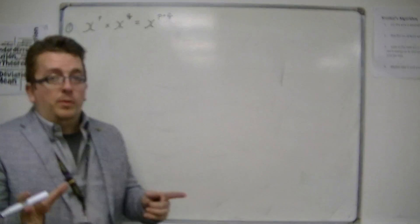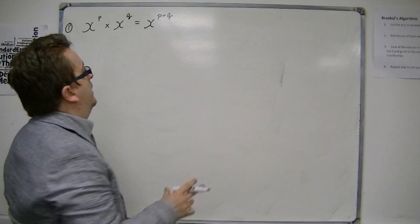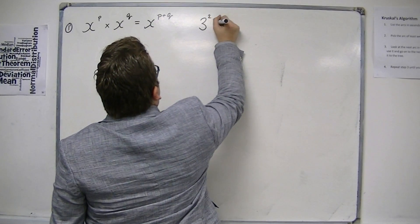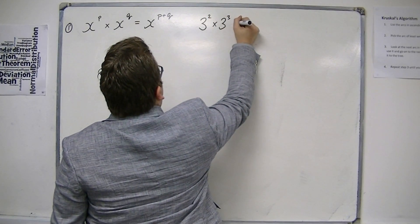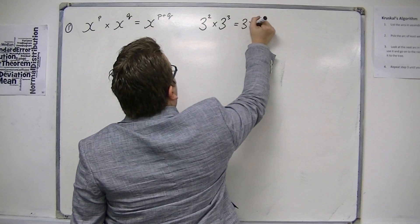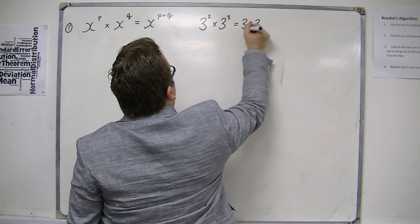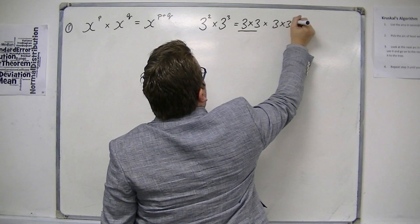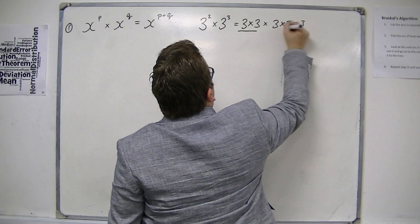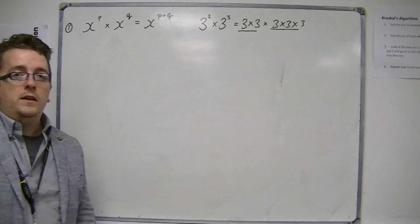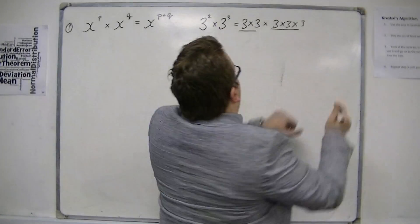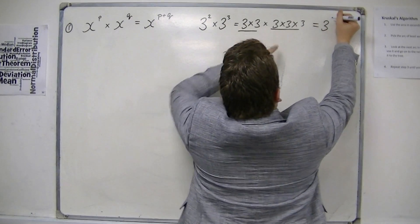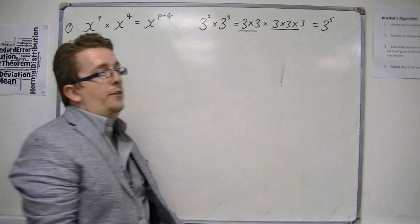Now an example of this, to show how it works, is that if you've got 3 squared times 3 cubed, then this is 3 times 3 — that's the 3 squared — multiplied by 3 times 3 times 3. That's the 3 cubed. And so you can see that we have 3 to the 2 plus 3, which is 3 to the 5.